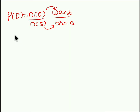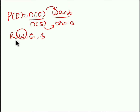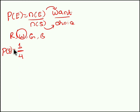For example, in a bag you have a red, a white, a green and a blue color ball. What is the probability of choosing a white color ball from the bag? You totally have 4 choices, so 4 is the total number of sample space. What exactly you want is 1 white color ball. So 1 out of 4 is the probability of choosing a white color ball from the bag.